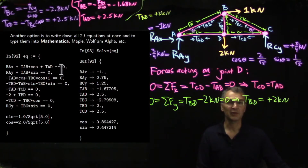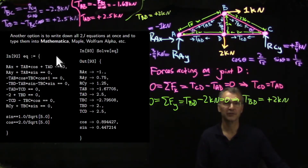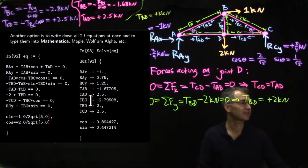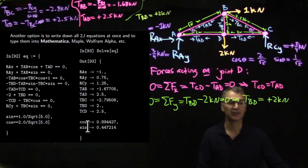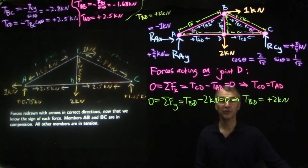This is a matter of style, as long as it's clear from the diagram what the actual signs and directions of the forces really are. You could also type all 2J equations at once into Mathematica or Maple or Wolfram Alpha and get the answers out. If you want to learn how to use Wolfram Mathematica, I have study materials for extra credit — Mathematica can be used license-free by all SAS and Wharton students. So we've solved our first truss.